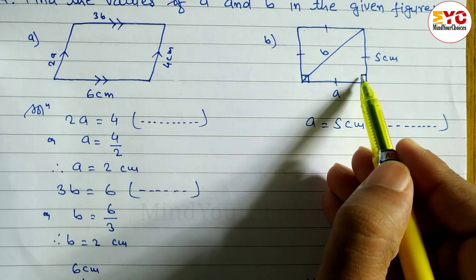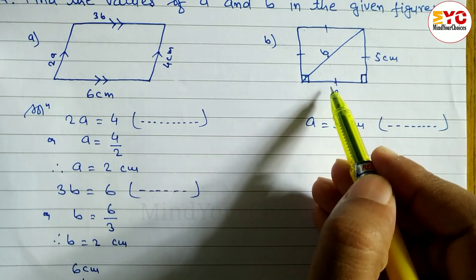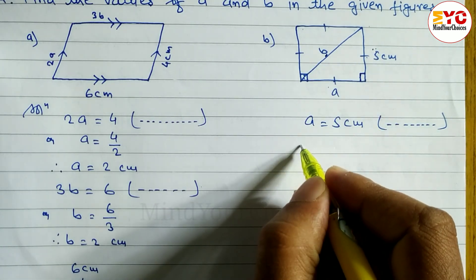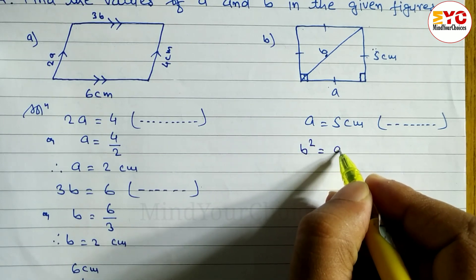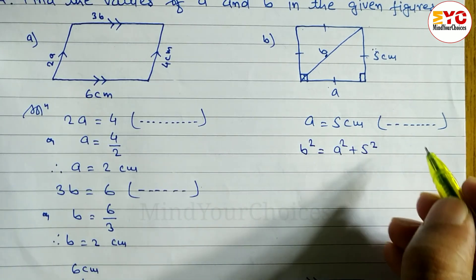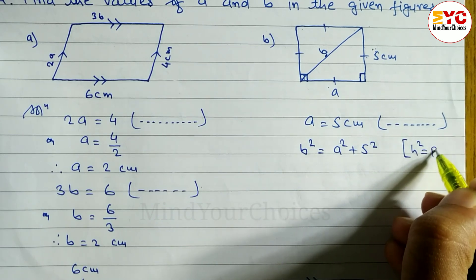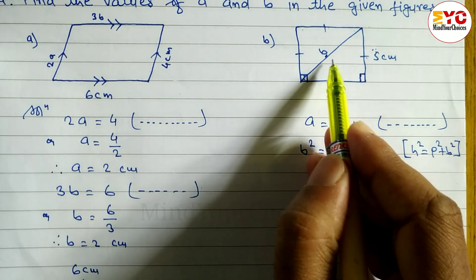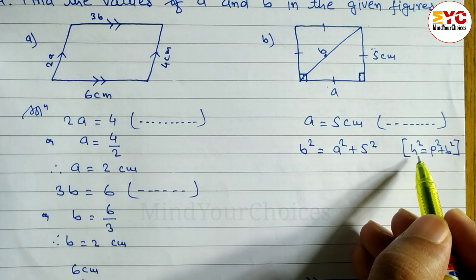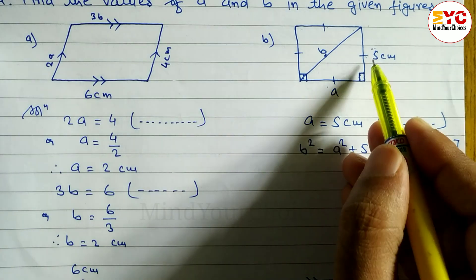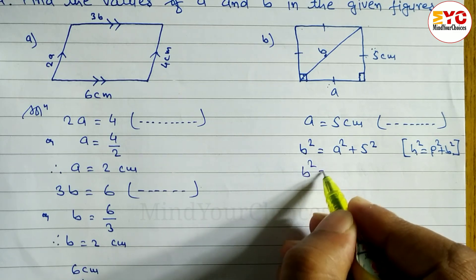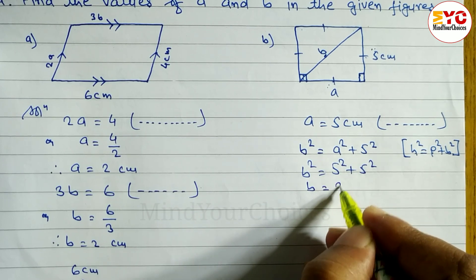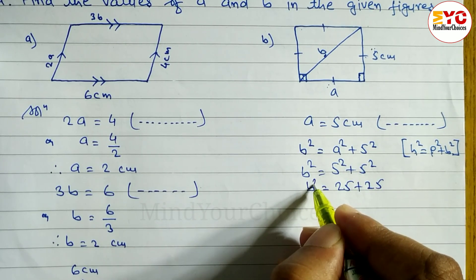Since all angles are 90 degrees, we use the Pythagorean theorem: h squared is equal to p squared plus b squared. Here, h is the side in front of the 90-degree angle, so we write b squared is equal to a squared plus 5 squared. The value of a is 5, so b squared is equal to 5 squared plus 5 squared.